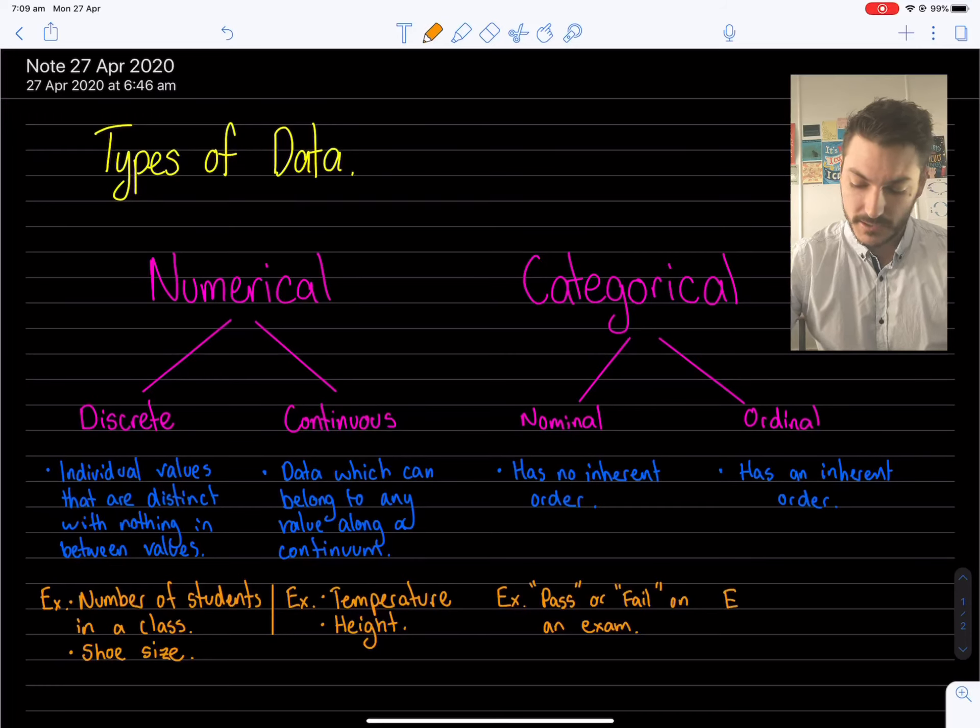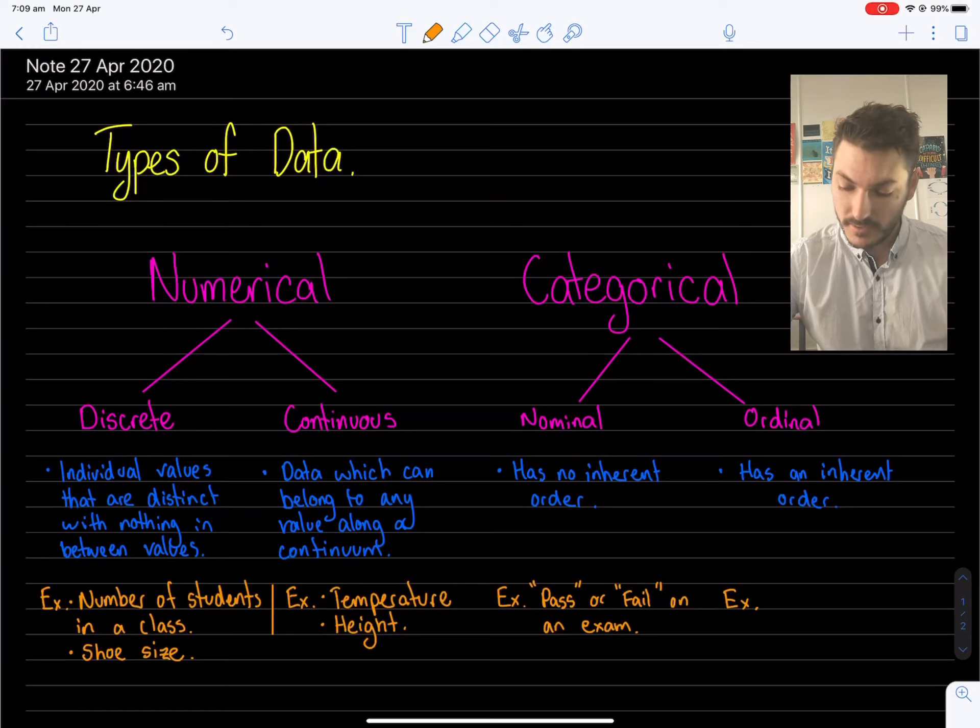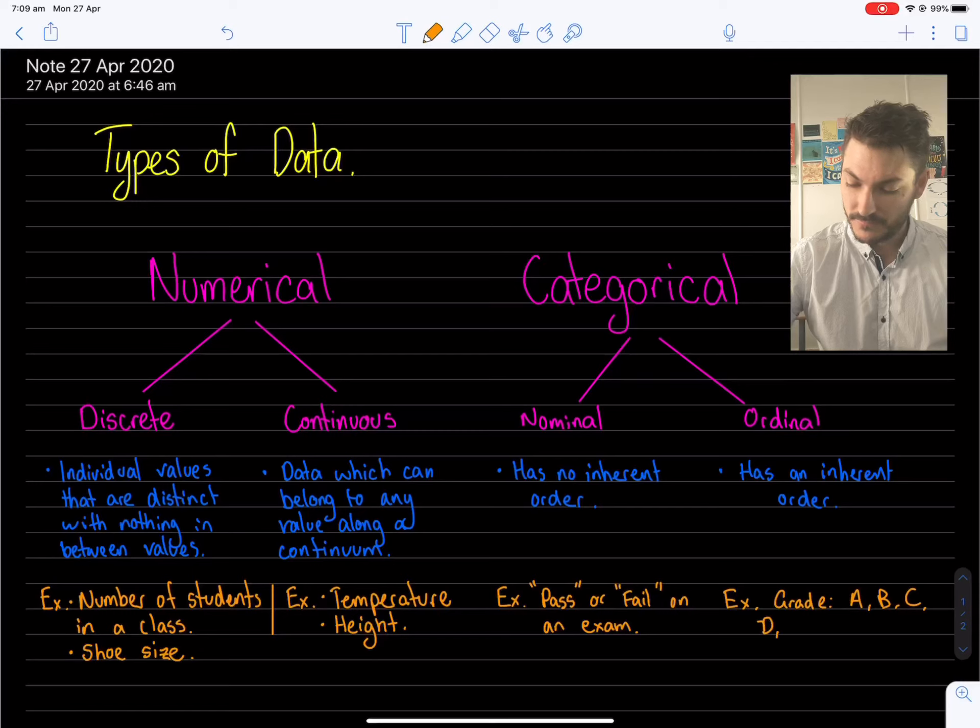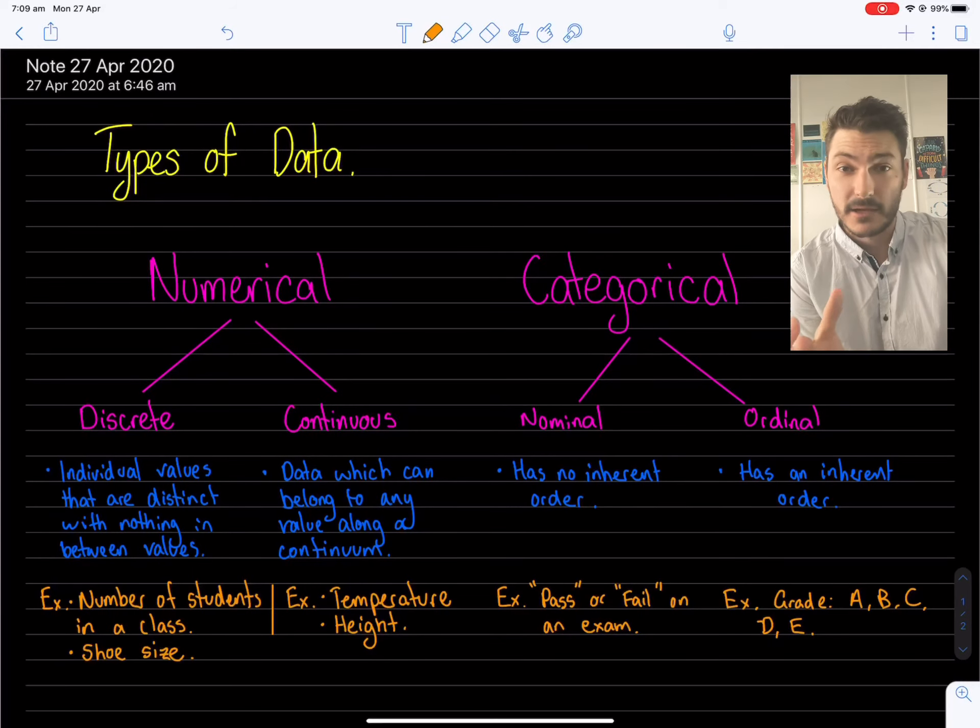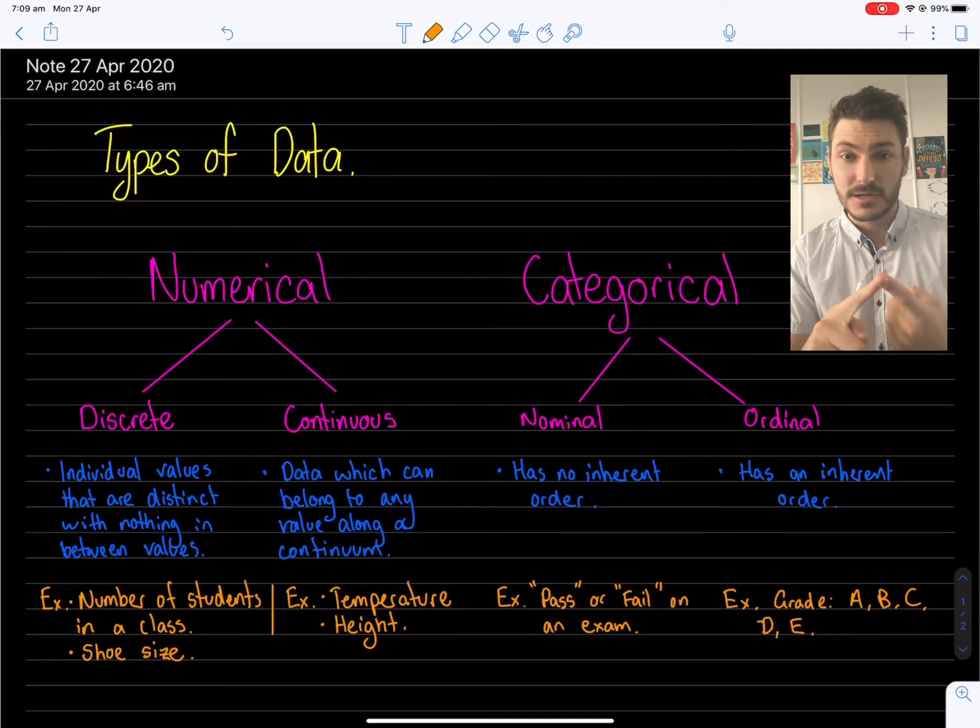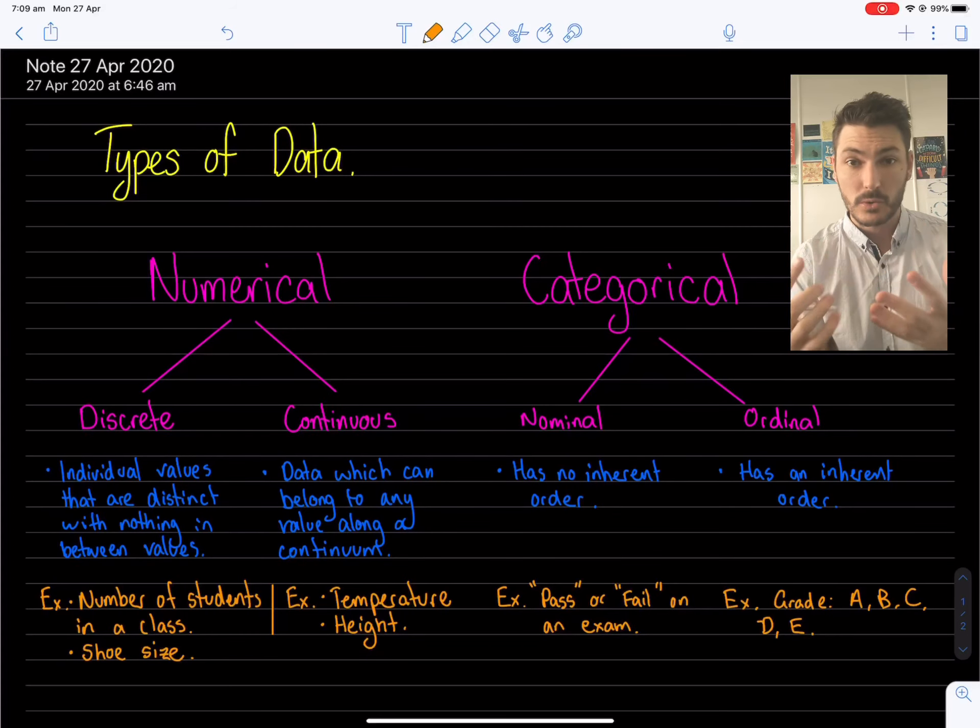Whereas ordinal data in a similar context of an exam can be grade. So we have A, B, C, D, E for our context. And that is a scale. There is an order there. A is better than B. B is better than C. C is better than D. D is better than E. So it's actually a sliding scale of order to these values.